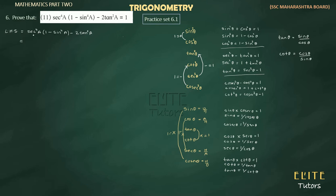First of all, what do we do with sec raised to 4? The bracket means sec raised to 4a multiplies both terms inside. So we open the bracket: sec raised to 4a multiplied by 1, which stays as sec raised to 4a, and then minus sec raised to 4a multiplied by sin raised to 4a, and then minus 2 tan squared a.